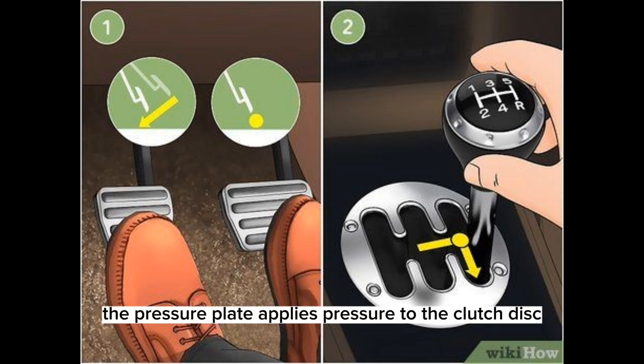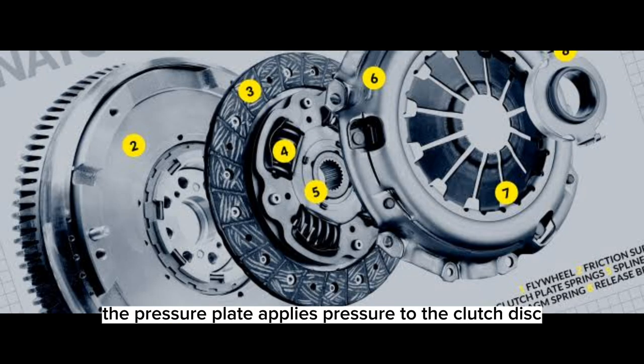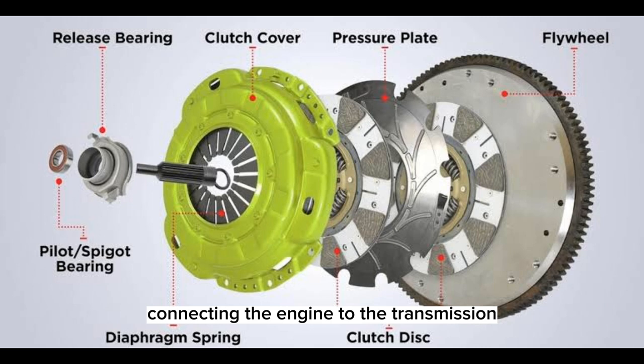A clutch consists of several parts, including the clutch disc, pressure plate, flywheel, and release bearing.